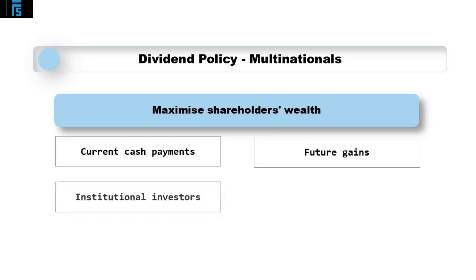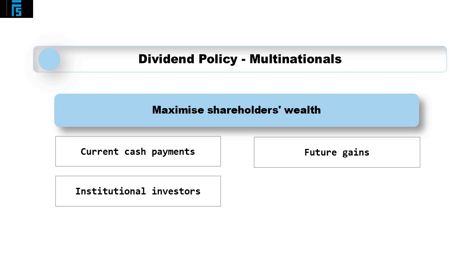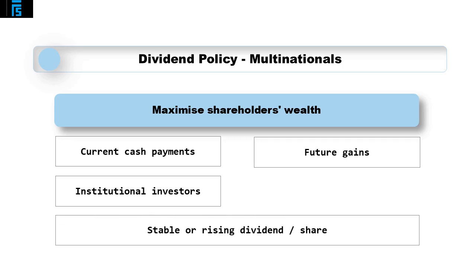You should be aware that the shareholders of many multinationals include institutional investors, for example investment and pension funds, which may have a strong preference for regular dividend payments. The dividend policy of such companies will therefore involve paying out a stable or rising dividend per share. Such an approach is not only in line with the expectations of shareholders, but also helps avoid the dividend signaling effect, thus stabilizing the share price.